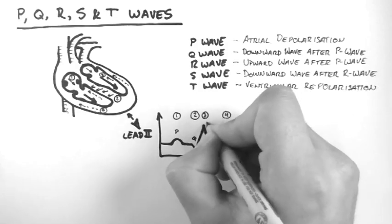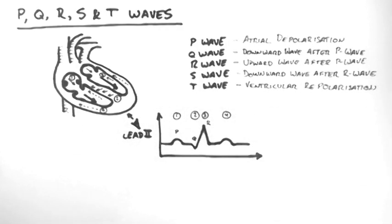This next wave is upward, and it's also after the P wave. So it's an R wave. There's no S wave here, so we don't need to label one.